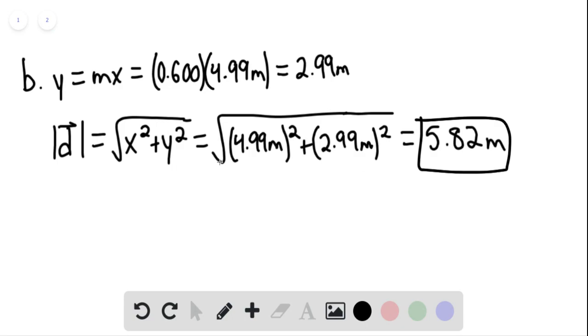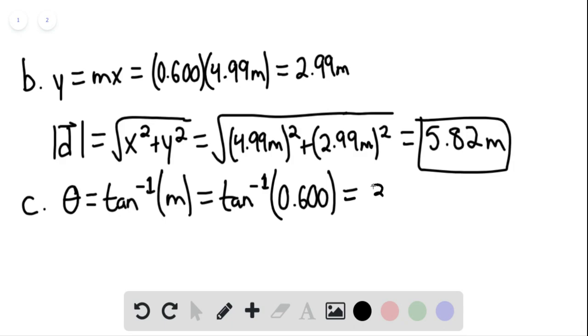The angle here would be the angle of the ramp. We can say that the angle of the ramp, theta, would be equal to arc tan of the slope, so arc tan of 0.6. This gives us 31.0 degrees.